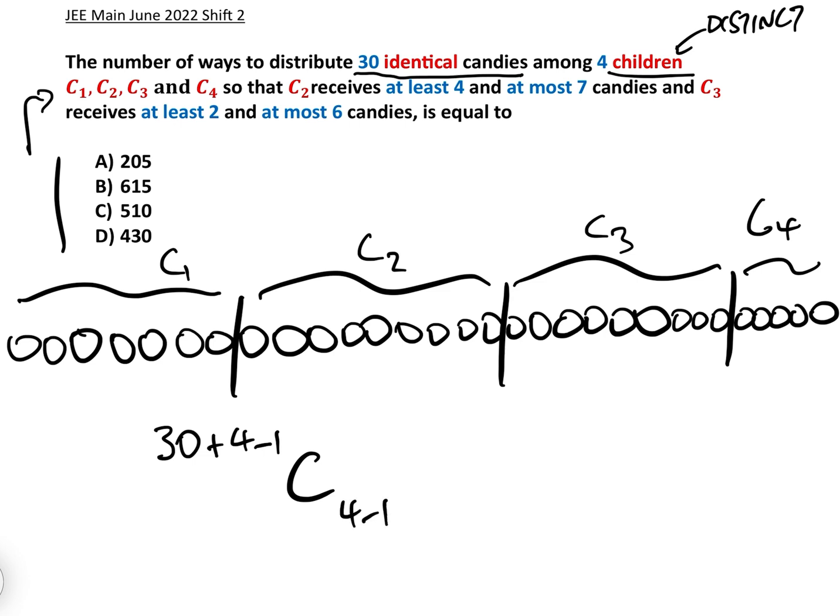Add four children minus one because there's only three bars, C4 minus one. We've already discussed this in the previous video which in this particular case, if there was no constraints, would be 33C3 and therefore the answer would be, if there was no constraints, 5456. Basically this method we are going to do exactly what we've just done there four times in order to include these constraints.